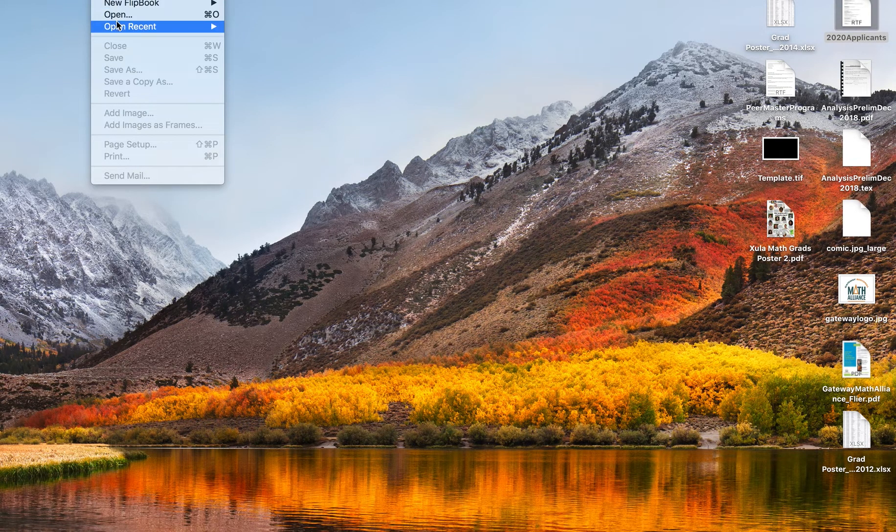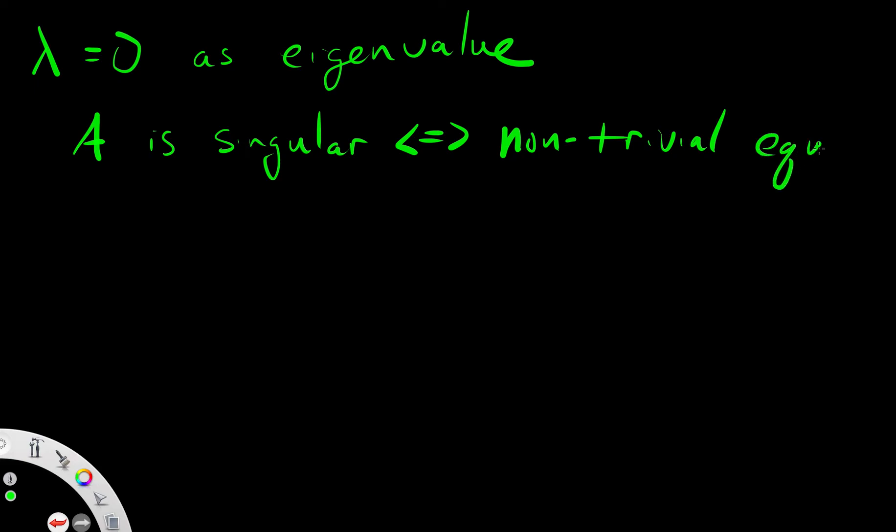Now, let's take a look at what happens when we have lambda equals 0 as an eigenvalue. When lambda equals 0 as an eigenvalue, that means that the matrix A is singular, which is the same thing as having non-trivial equilibrium solutions.